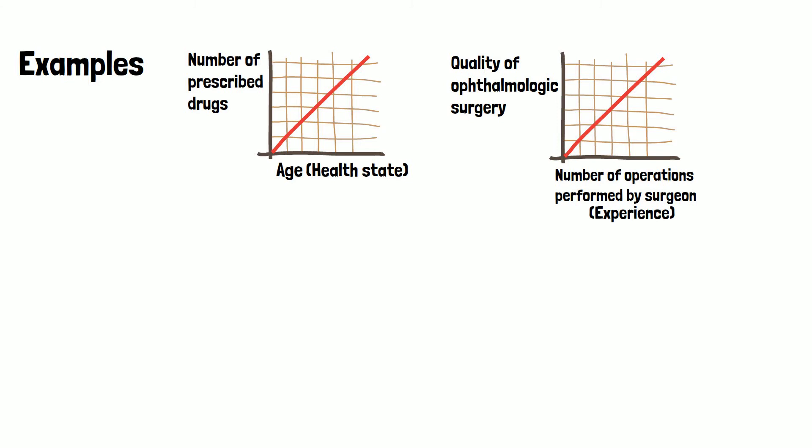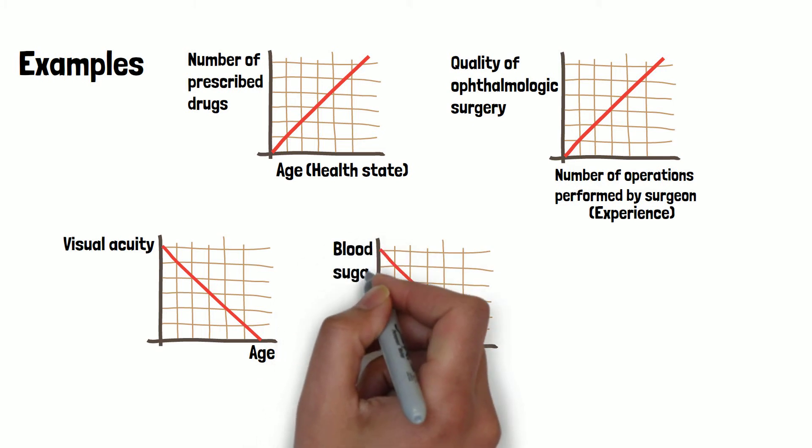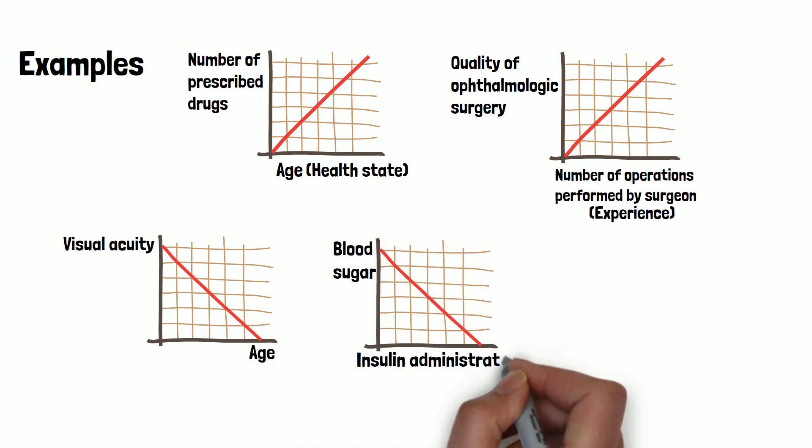An example for a negative correlation would be if we look at the visual acuity with ongoing age. The older the person, the worse becomes the visual acuity. Other examples are the blood sugar with the administration of insulin, or the asthma condition of a person in relation to the activity level.